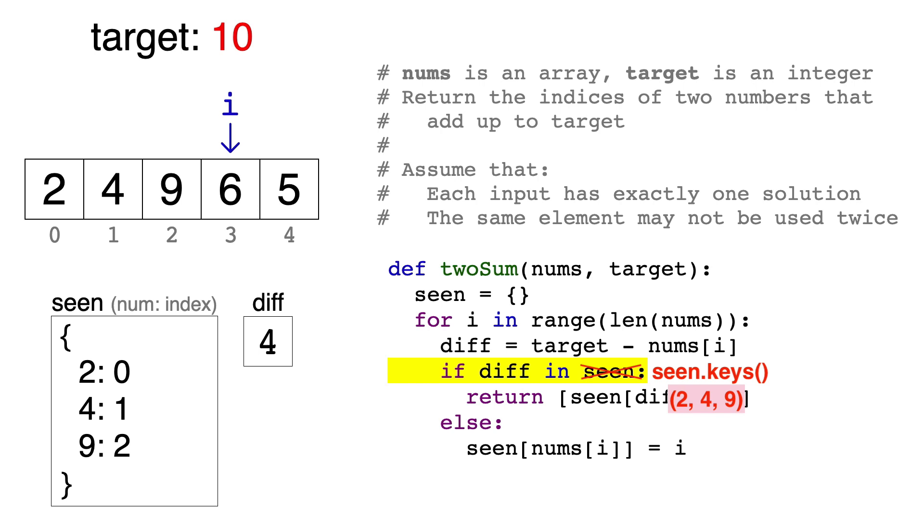Instead, by using this syntax, what Python actually does is that it uses the normal way of looking up hash table values by calculating the hash of the key, and jumping straight to it to see if there's anything there. So the fact that this line of code runs in constant time is the key to running this entire algorithm in linear time.